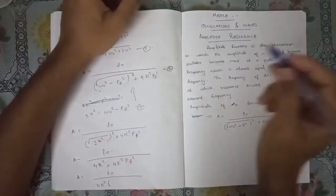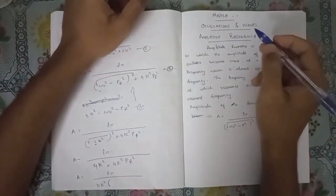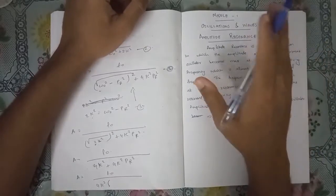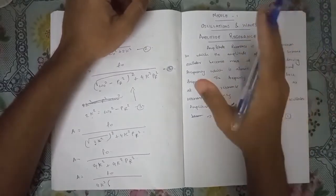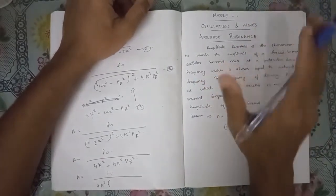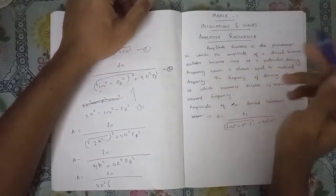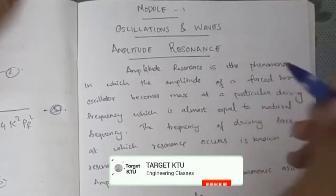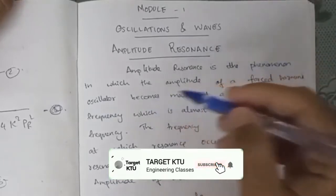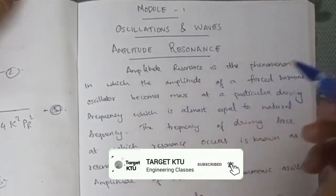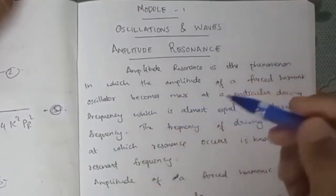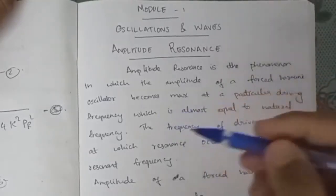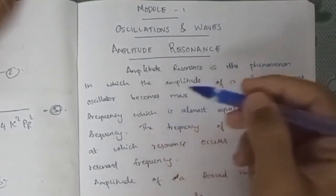Hi friends, welcome back! What is the Amplitude Resonance? Amplitude Resonance is the phenomenon in which the amplitude of a forced harmonic oscillator becomes maximum at a particular driving frequency, which is almost equal to the natural frequency.